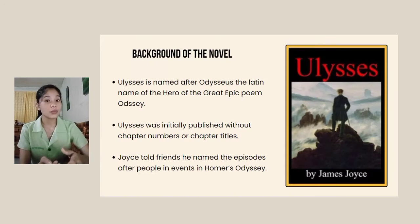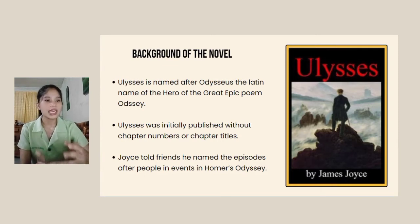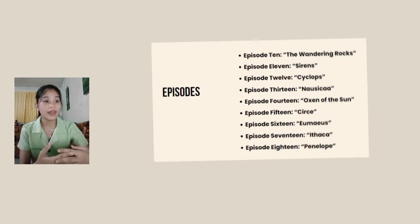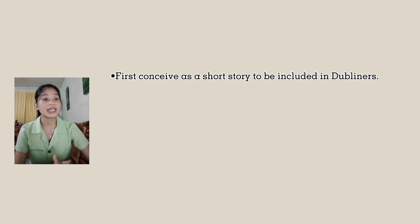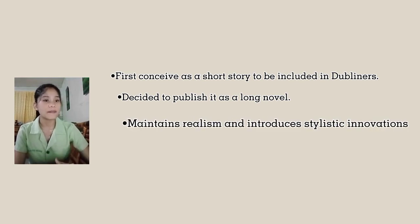Ulysses was initially published without chapter numbers or chapter titles. The 18 chapters, called episodes, still appear without titles in newer editions. Joyce told his friends he named the episodes after people and events in Homer's Odyssey. Joyce first conceived of Ulysses as a short story to be included in Dubliners, but decided instead to publish it as a long novel, situated as a short sequel to A Portrait of the Artist as a Young Man. Ulysses maintains Joyce's concern with realism but also introduces stylistic innovations similar to those of his modernist contemporaries.